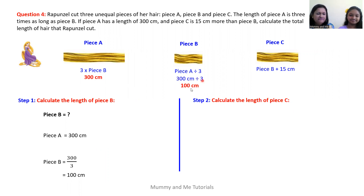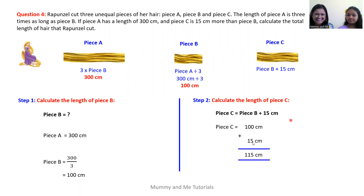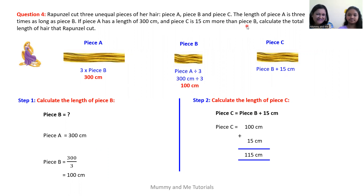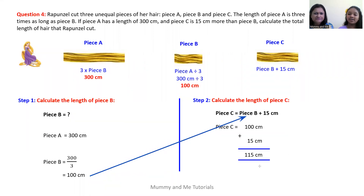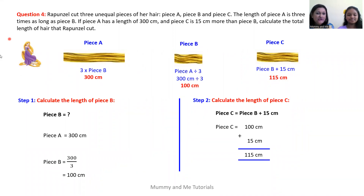Step two is to calculate the length of piece C. Now that we know the length of piece B, the question told us that piece C equals piece B plus 15 centimeters, because it is 15 centimeters more than piece B. So piece C equals 100 centimeters plus 15 centimeters, which gives us 115 centimeters.